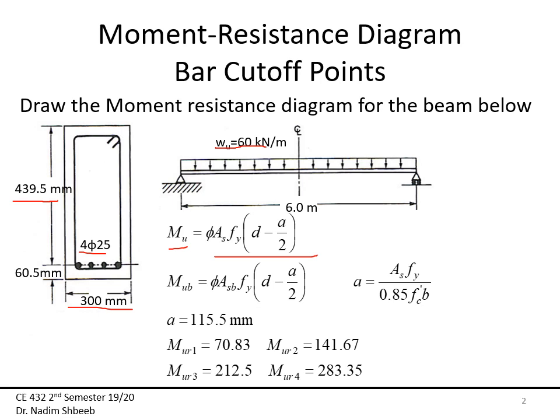Using φMn = 0.9 × As × fy × (d − a/2), with fy = 420 MPa and the area of four 25mm bars, I calculate 'a' as As × fy / (0.85 × f'c × b), which gives a = 115.5 mm.